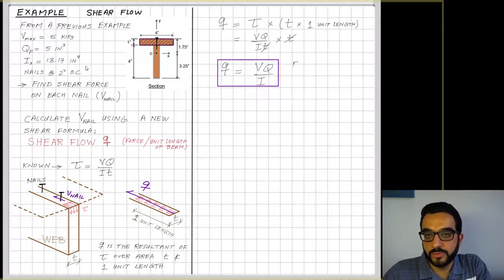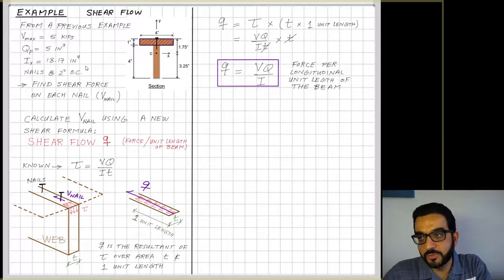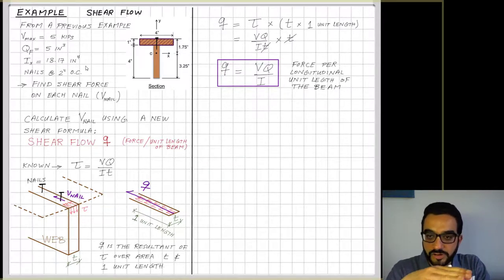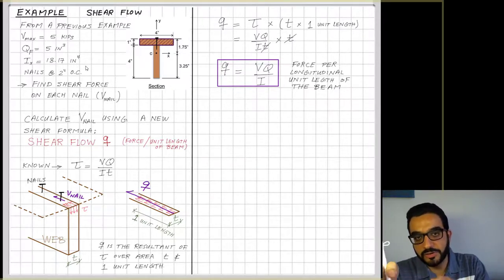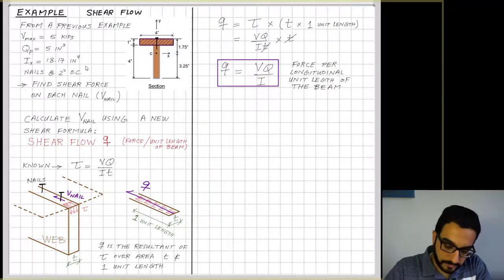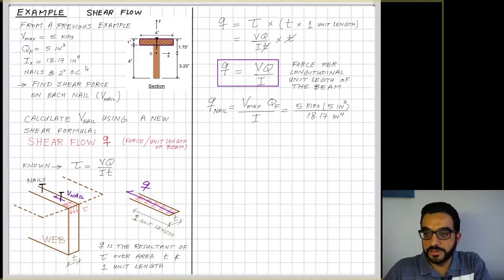If I plug in tau to be VQ over It, I will end up with q lowercase, which is the shear flow, to be very similar to tau in terms of formula, but now it's not dependent on the thickness of the slice or the thickness of the material you're slicing. So it's VQ over I, and that's it.